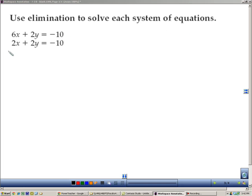Here's an elimination problem again. The coefficients of the y's are the same, so I will subtract them. 6 minus 2 is 4x, 2 minus 2 is 0, negative 10 minus negative 10, again I'll write that out, minus a negative is the same as negative 10 plus 10, which is 0.